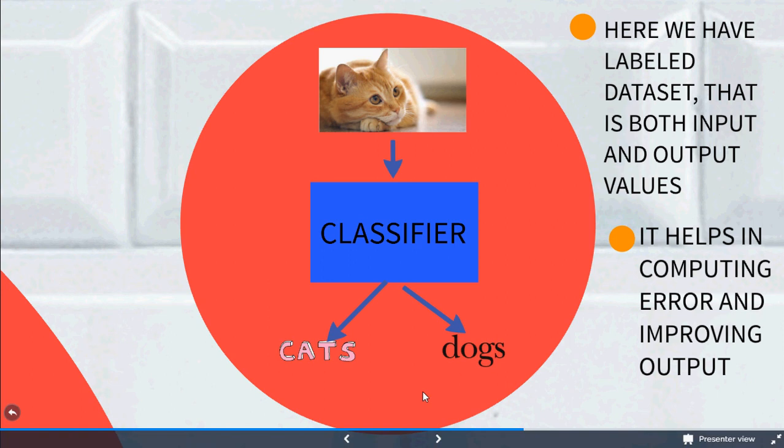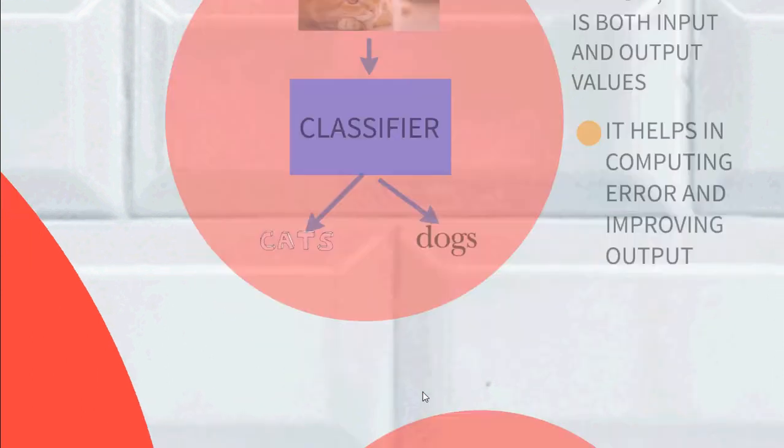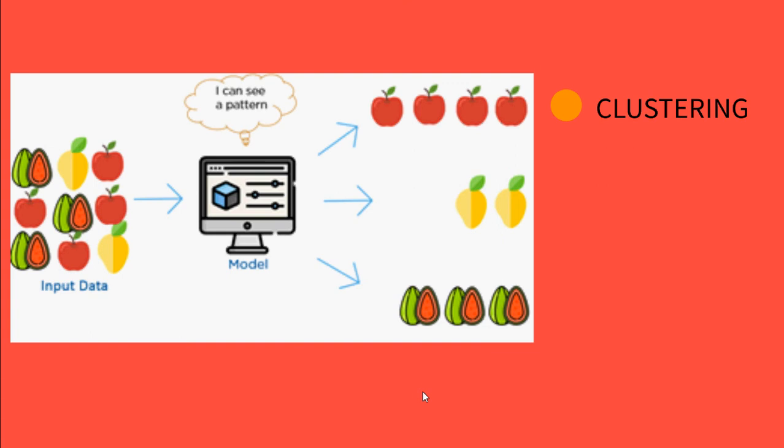But the major problem with these kinds of algorithms is that it requires a labeled dataset. In today's scenario, most of the data that is present in the world today is unlabeled. This is where the unsupervised learning strategy comes.